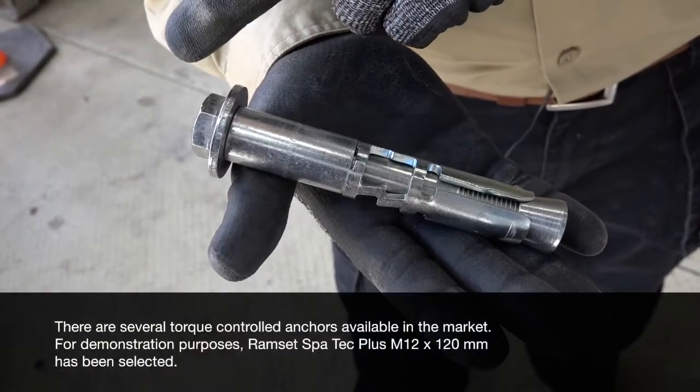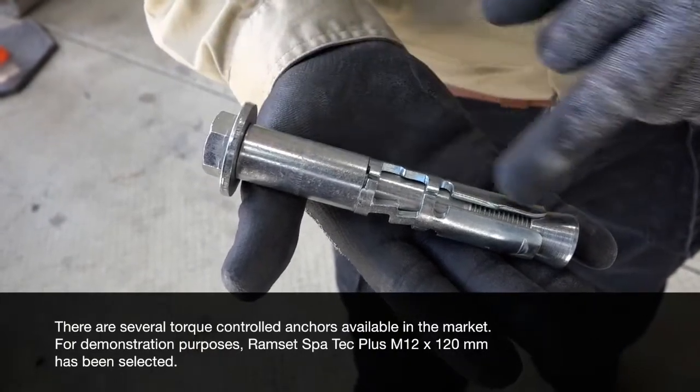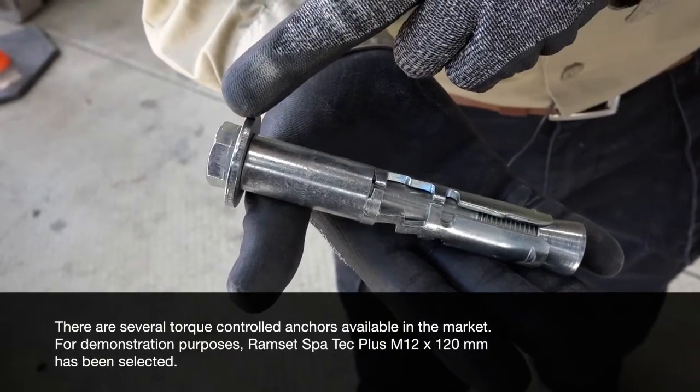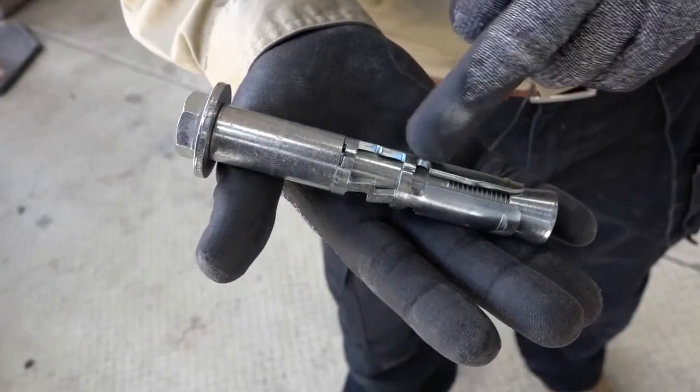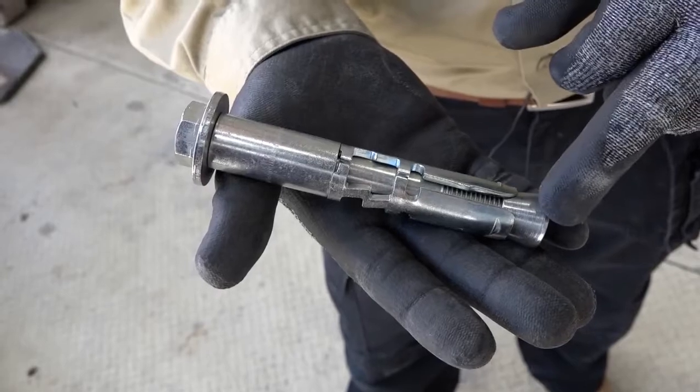This type of anchor will typically have the following components: a bolt or stud, structural washer, shear spacer, pull down mechanism, expansion sleeve, and a cone mechanism.